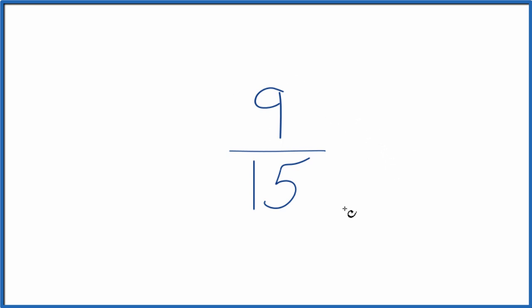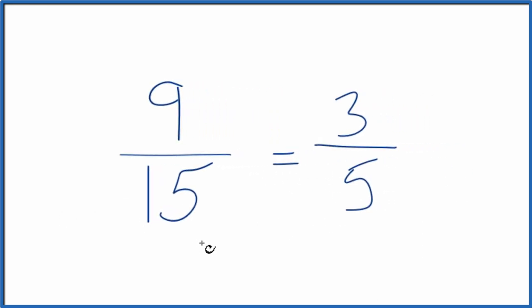So we could simplify 9/15. That's a good place to start here because 3 goes into 9 three times. 3 times 3 is 9. And 3 goes into 15 five times. 3 times 5 is 15. So 3/5, that's an equivalent fraction for 9/15, sometimes called an equivalent ratio.